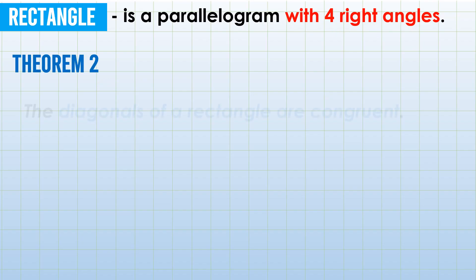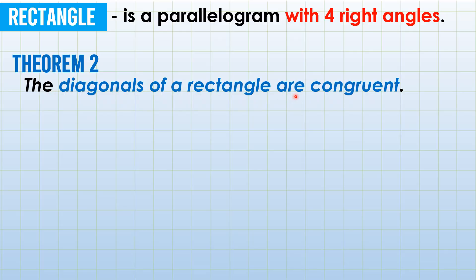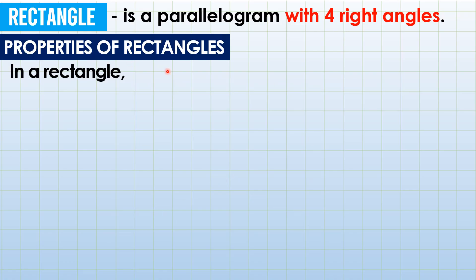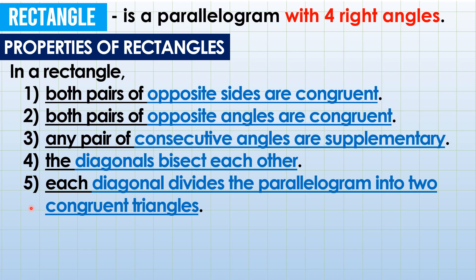Theorem 2: The diagonals of a rectangle are congruent. So, let's have rectangle RECT here. It says diagonals are congruent. The first diagonal RC is congruent to diagonal ET. Clearly, they are the same. Now, let's have the properties of rectangles. This is a summary. In a rectangle, of course, the five properties of parallelograms can be applied to it. And its additional property or theorem is what we just mentioned: diagonals are congruent.